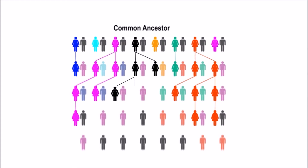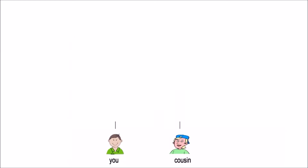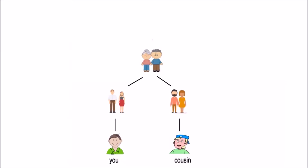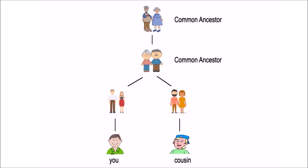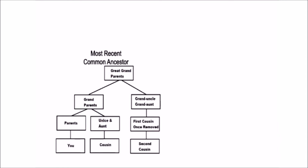In genealogy, a common ancestor of any set of individuals is defined as someone from whom all the people in the group are descended. For example, you and your cousin are descendants of the same grandparents, so your grandfather and his parents are common ancestors of you and your cousin. The most recent common ancestor, or MRCA, is the common ancestor from whom a set of individuals are directly descended. In this example, your grandfather would be the most recent common ancestor of you and your cousin.